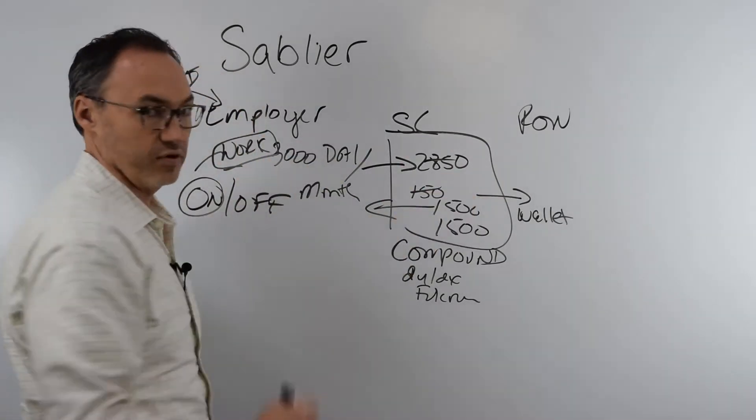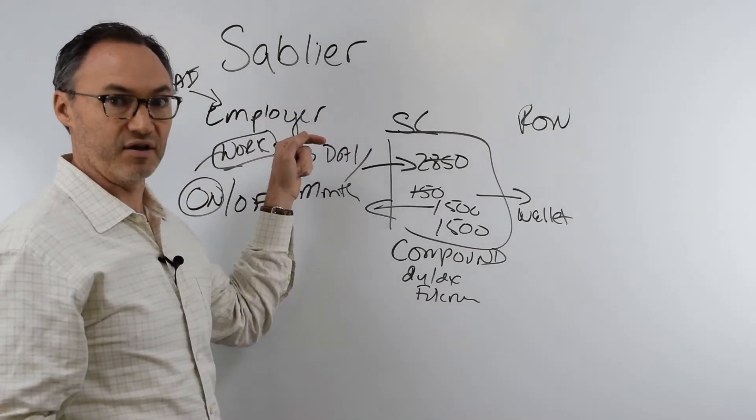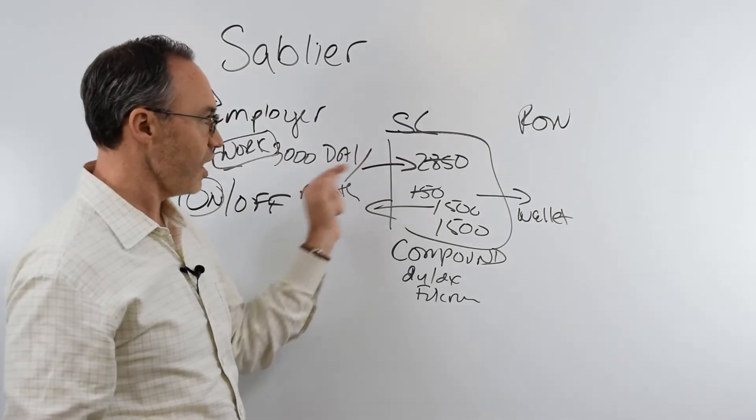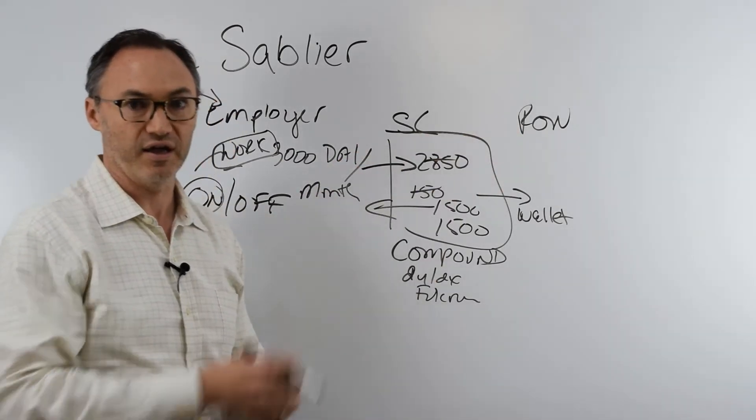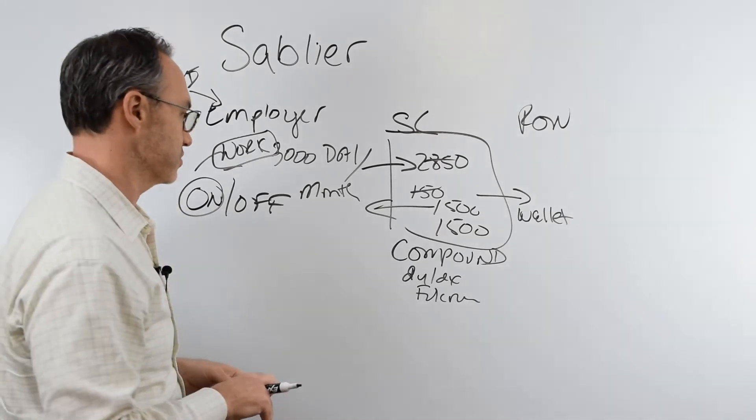Now, of course, at some point I have to create the off ramp. But imagine if the employer is getting paid for their services in DAI. Now they've created some of their own off ramp. They don't have to go through a bank for all this. They might be getting paid in DAI from someone else and then they're paying their employees in DAI and it can all be tracked and held within wallets and smart contracts and such.